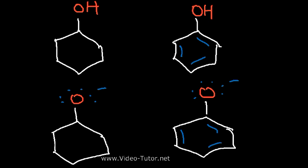So notice that the electrons in this oxygen are localized. They can't move around. There's no resonance structure that we can draw for the conjugate base of cyclohexanol. That's why it's less stable. This oxygen bears the entire negative charge.